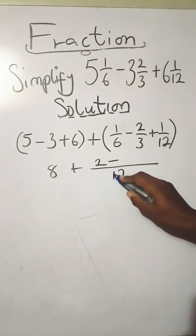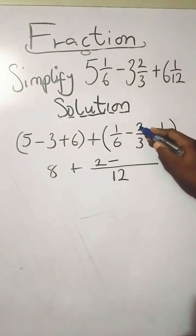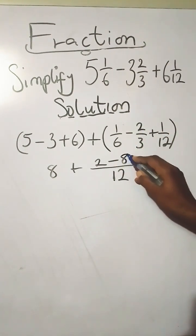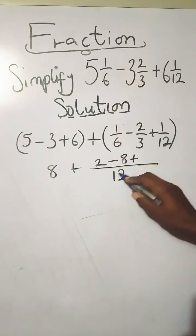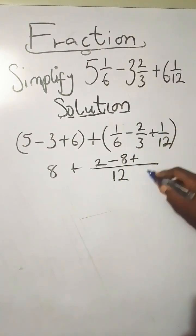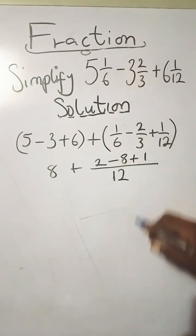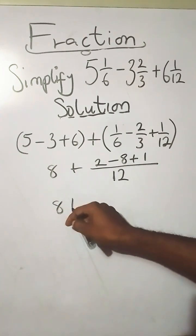3 goes into 12 four times, and 4 times 2 you have 8. Then 12 goes into 12 once, and 1 times 1, you have 1.